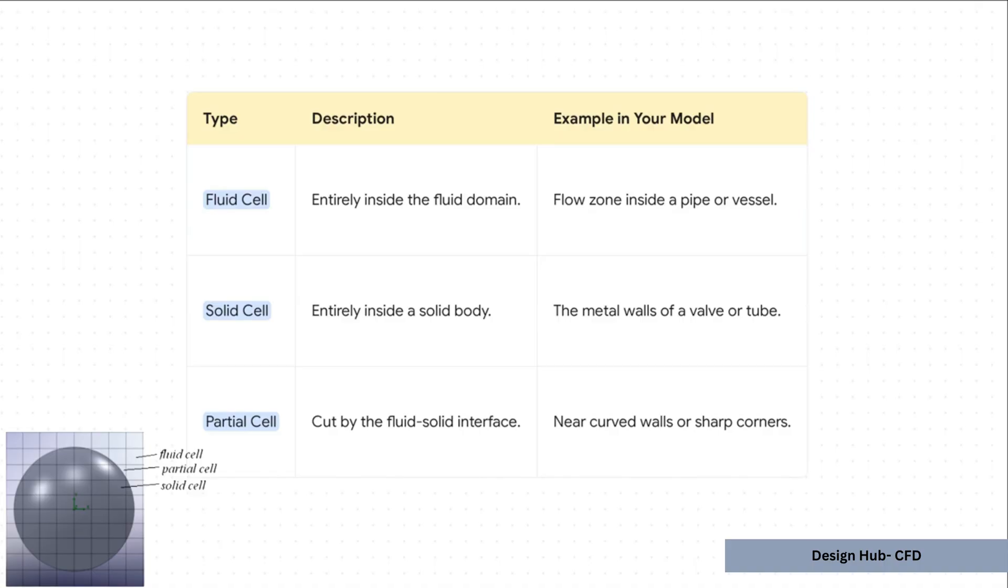Then you have solid cells, which the software pretty much ignores for the flow part. And then you've got partial cells. Now these, these are the most important ones because they define that critical boundary right where the fluid touches the solid. Getting these right is the absolute key to an accurate simulation.